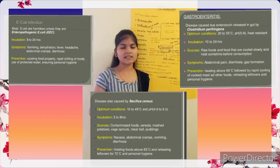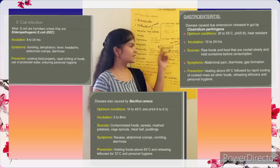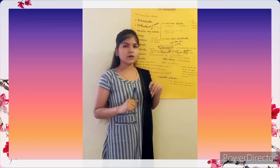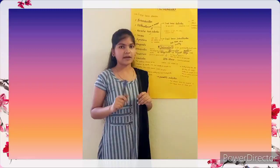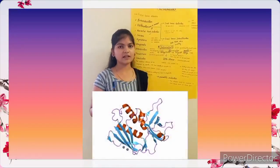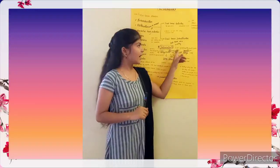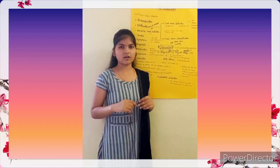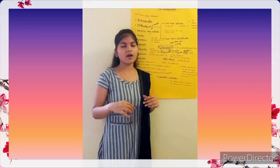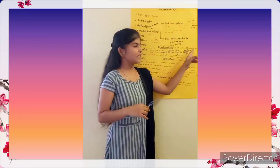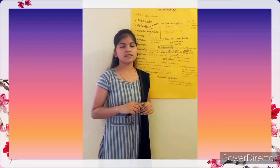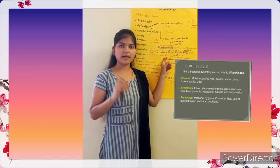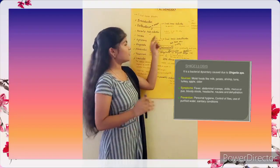E. coli, gastroenteritis, and Bacillus cereus are also included among bacterial food infections and cause many diseases. E. coli is mostly harmless, but enteropathogenic E. coli is very harmful. Gastroenteritis is a disease caused in the gut of the human body by Clostridium perfringens. Bacillus cereus also causes disease in humans. Shigellosis is also one of the best examples of bacterial food infection.